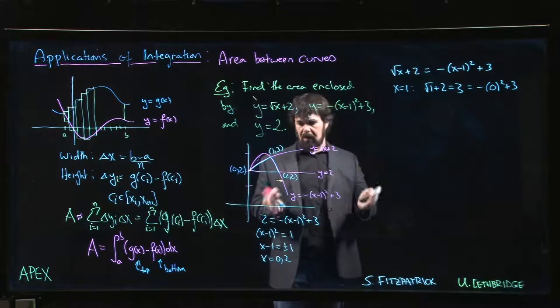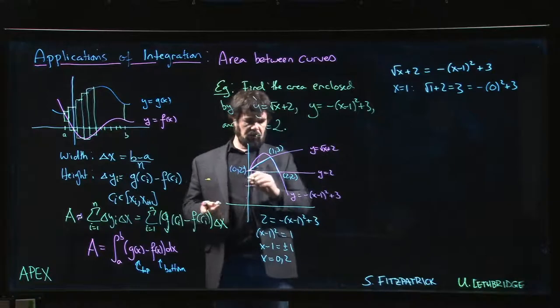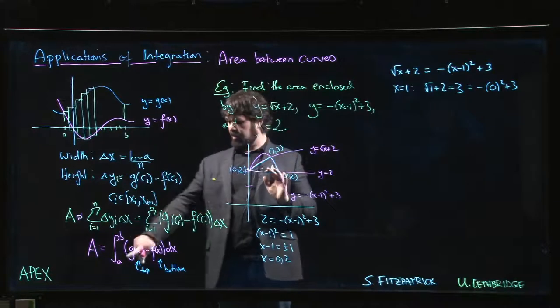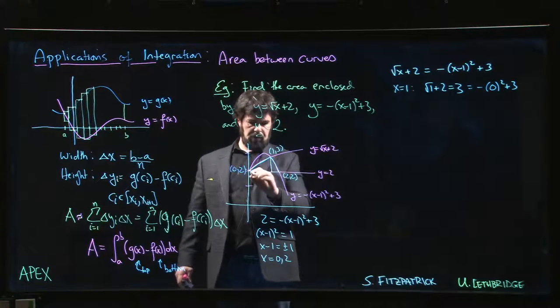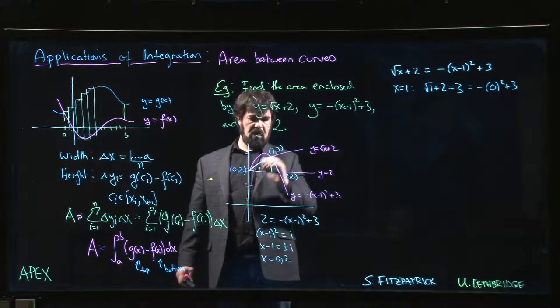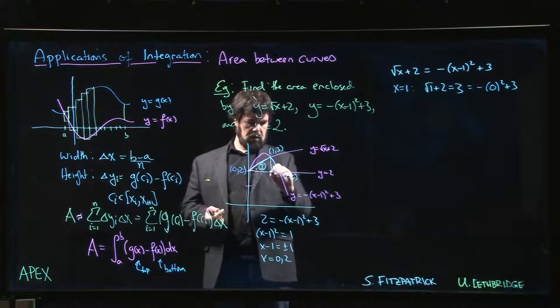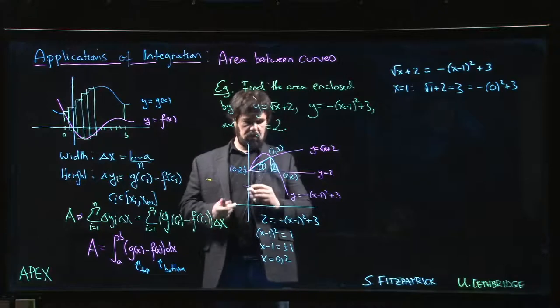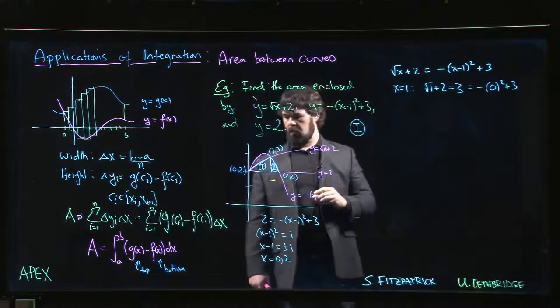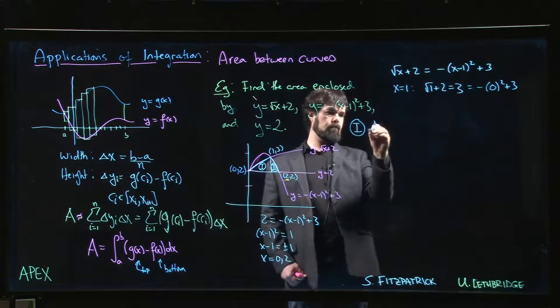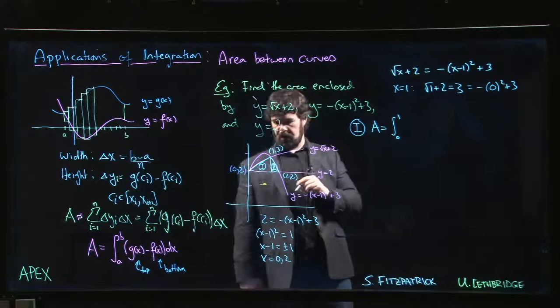Now there are two ways that you can set up this problem depending on how much work you want to do. One is to notice that the way we've been setting things up with this picture here, we actually have to sort of consider two separate regions. We have to do this region and then this region. Let's label them maybe 1 and 2.